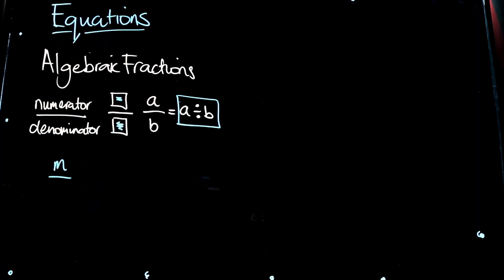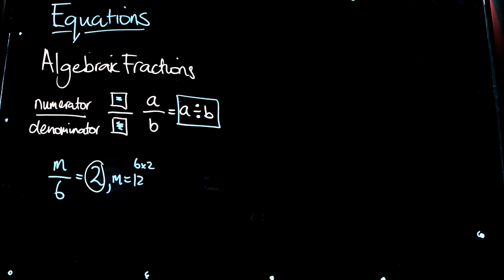Let's do a real simple one: m divided by six equals two. We could start guessing — six divided by six is one, twelve divided by six is two — so we know the value of m is twelve. Twelve is six times two, so the denominator multiplied by the answer on the right-hand side gives us twelve, and that's the value of m.